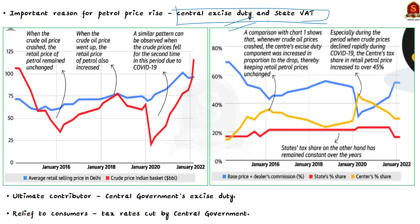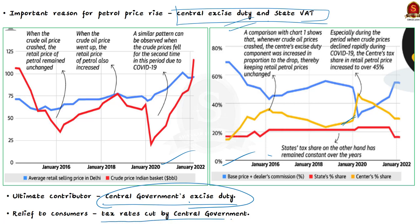Looking at the graph, the center's excise duty on petrol kept increasing even when the crude oil price was decreasing. Both central excise duty and state VAT contribute much of the retail price of petrol, but the central excise duty dominated even when crude oil prices decreased. The state VAT tried to remain constant and then started to decline. So the central government is the ultimate contributor to the rise in retail price of petrol.